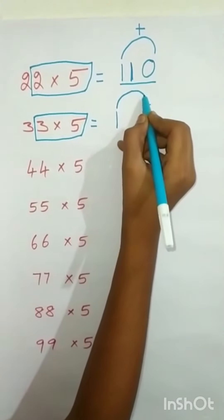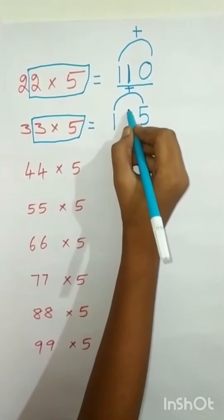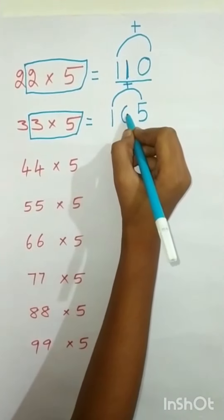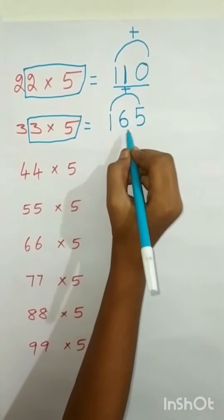Then, we have added these 2 numbers. 1 plus 5 is equal to 6. The final answer is 165.